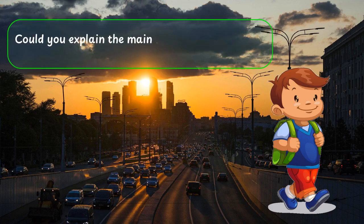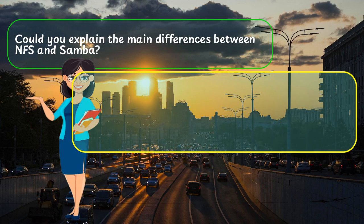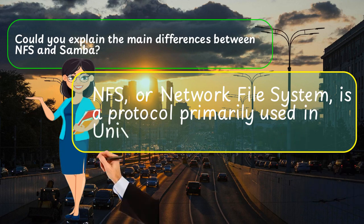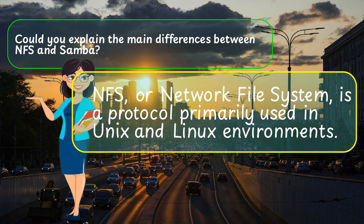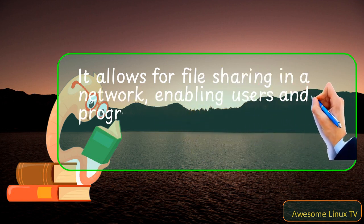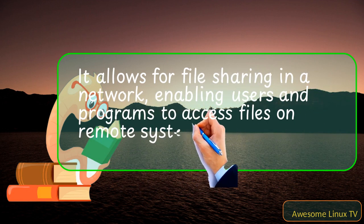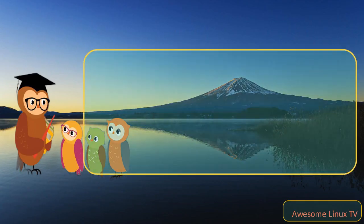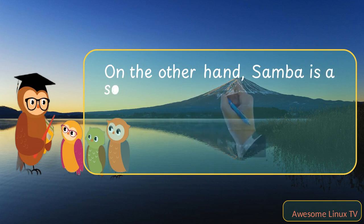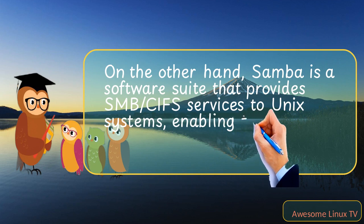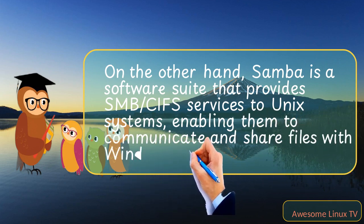Could you explain the main differences between NFS and Samba? NFS, or Network File System, is a protocol primarily used in Unix and Linux environments. It allows for file sharing in a network, enabling users and programs to access files on remote systems almost as if they were local files. On the other hand, Samba is a software suite that provides SMB/CIFS services to Unix systems, enabling them to communicate and share files with Windows networks.